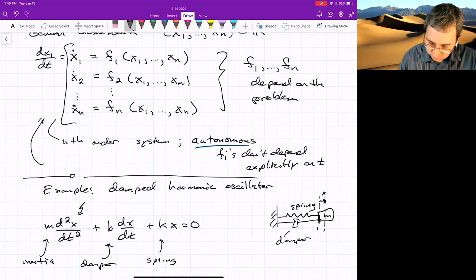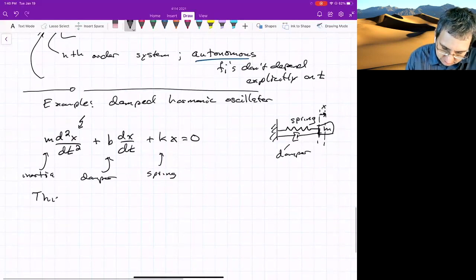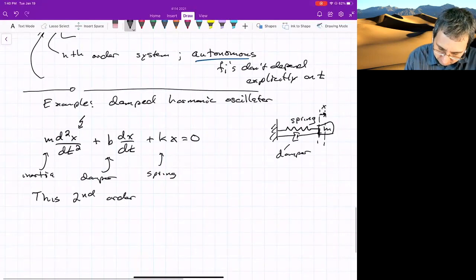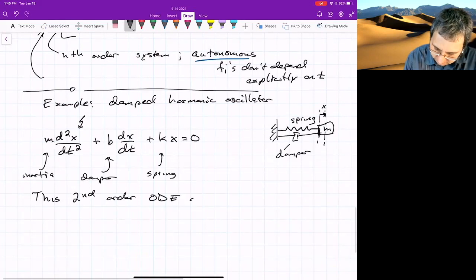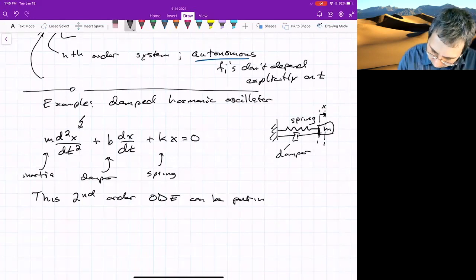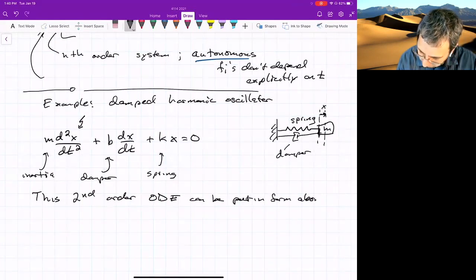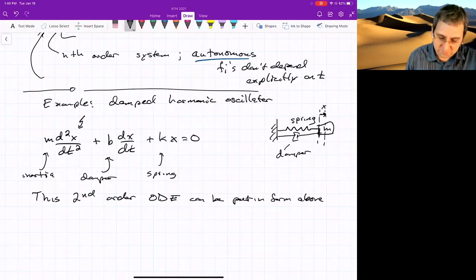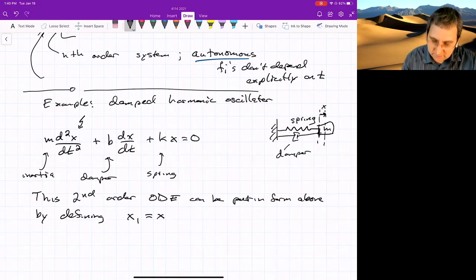Well, we would define some new variables. So this second order ODE can be put in form above by defining some variables. So we'll define x1 equals x, and then x2 equals dx dt, which is the same as x1 dot.